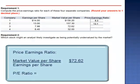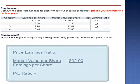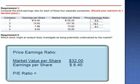Company three: $72.62 divided by $7.98 is a price-earnings ratio of 9.1. And company four: $32 per share divided by $8.40 earnings per share is a price-earnings ratio of only 3.8.